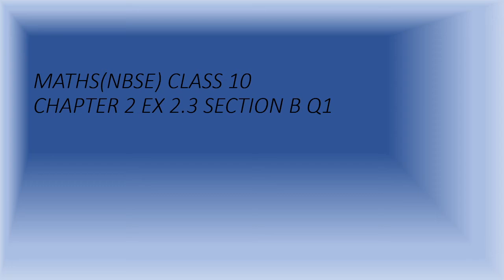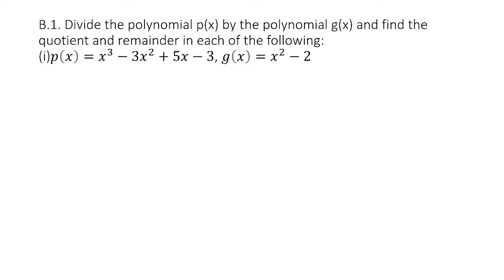Welcome back students. In this video we'll be doing exercise 2.3, section B, the first question. This is the question given to us. We have to divide the polynomial P(x) by the polynomial G(x) and find the quotient and remainder. P(x) is a cubic polynomial because the degree of the given polynomial is 3.